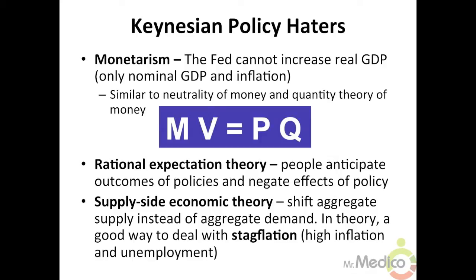Supply-side economic theory focuses on shifting aggregate supply instead of aggregate demand. This is a good way to deal with stagflation — high inflation and unemployment caused by a leftward shift of the short-run aggregate supply curve. For example, if there is a negative supply shock, the government can reduce taxes for all producers, lowering the cost of production and shifting short-run aggregate supply to the right, so inflation and unemployment both fall.